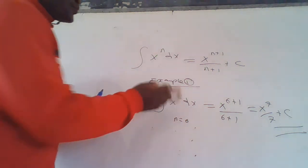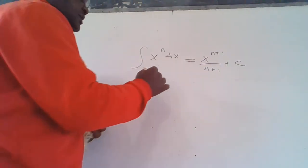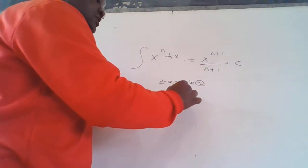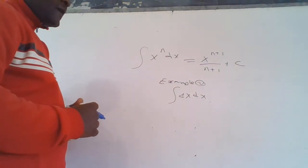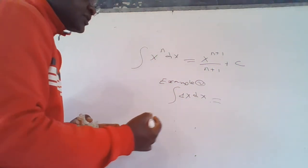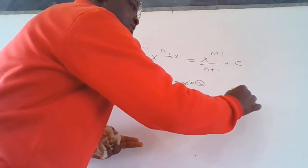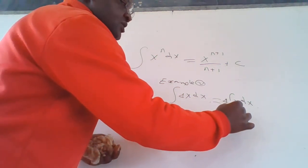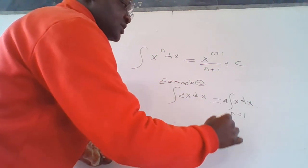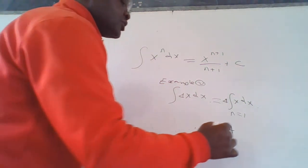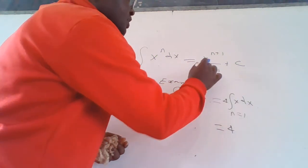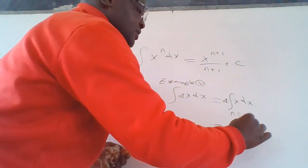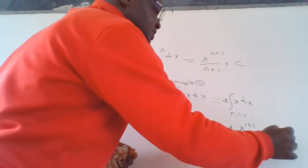Example two: we have the integral of 4x dx. This equals — you can take 4 out because it is a constant — so you have 4 times the integral of x dx. The value of n in this equation is 1. Therefore, when we integrate, we have 4 times x raised to n, where n is 1, so x raised to 1 plus 1, over 1 plus 1, plus the constant.